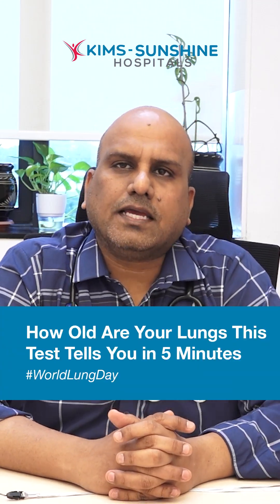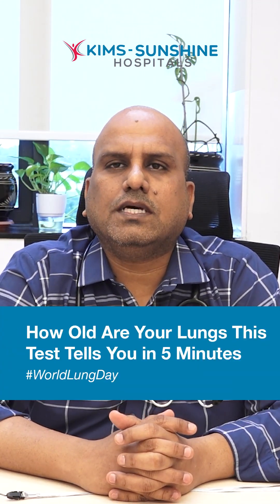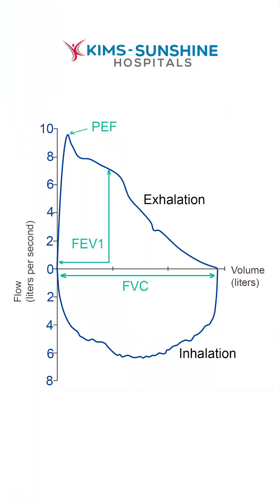The assessment of your lung age is done by a simple test called spirometry, which is also called a pulmonary function test. In spirometry, the patient's value of FEV1 — forced expiratory volume in one second — is compared to that of a non-smoker's normal aged person.